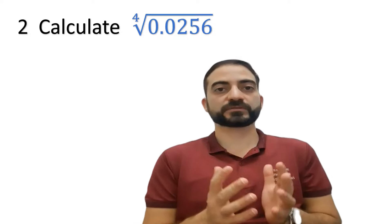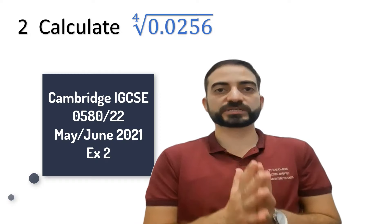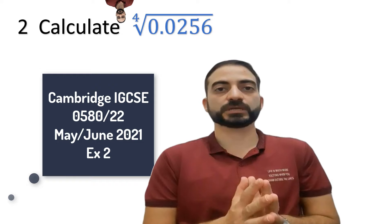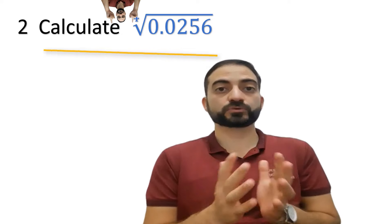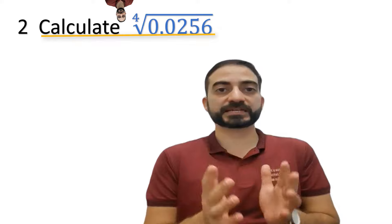Hello everyone, in this video we will solve the second equation of the Cambridge IGCSE 2021 competition. We are required to calculate the fourth root of 0.0256.